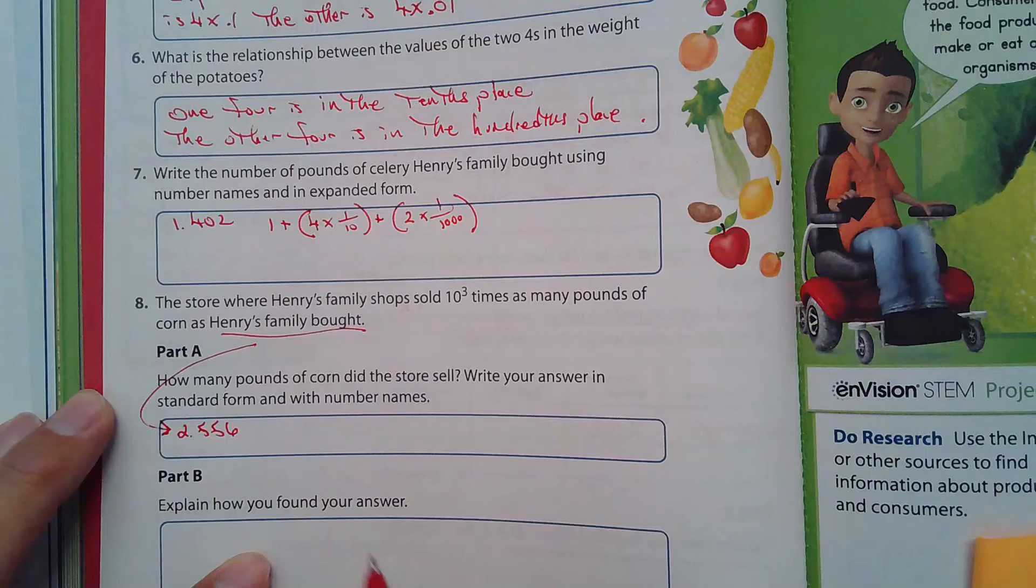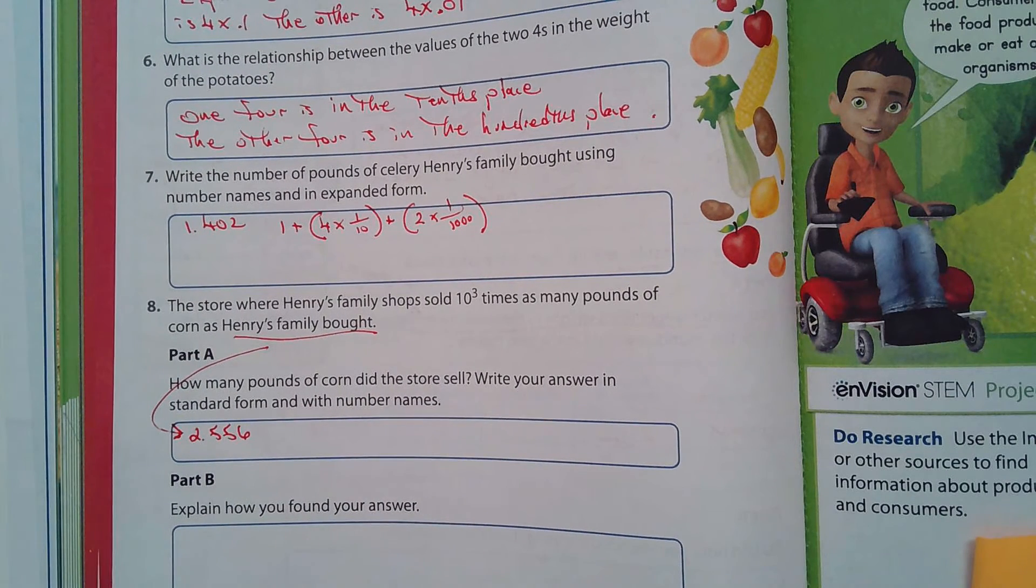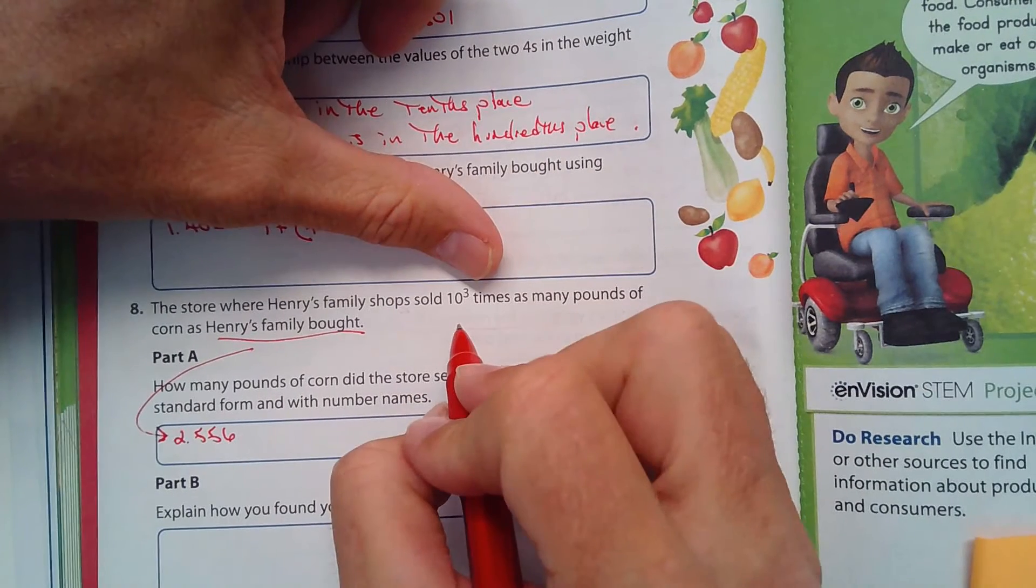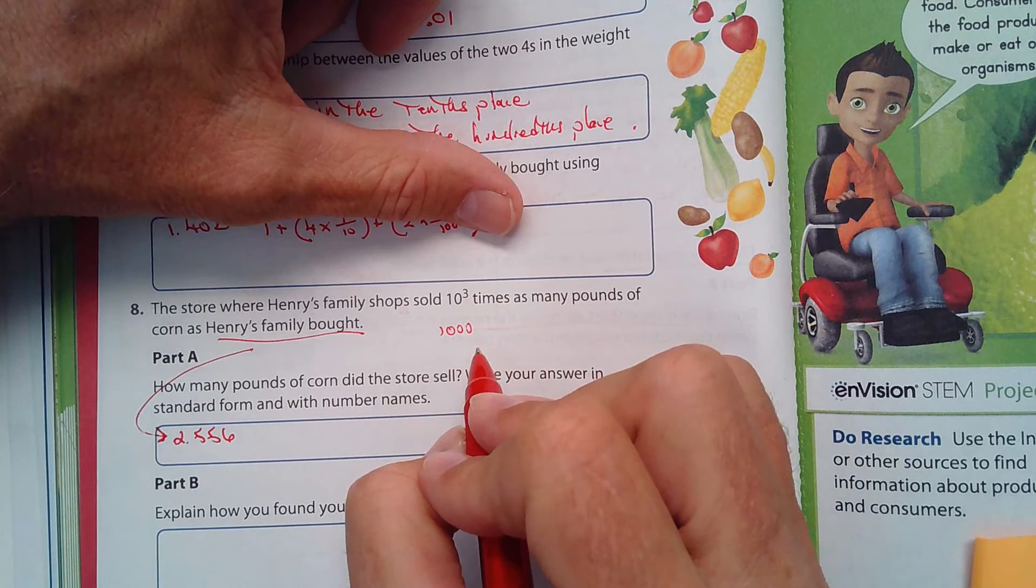And the store sold 10 to the third times that. Well, what's another way of saying 10 to the third? That's going to be 1,000, three zeros, right?